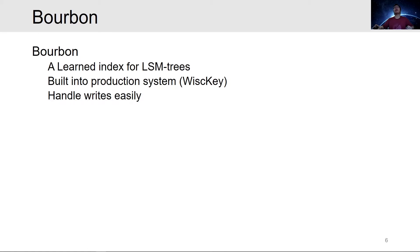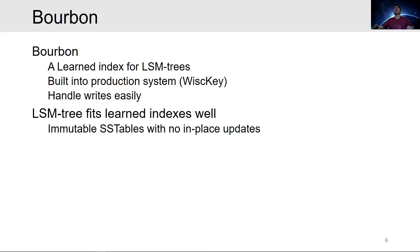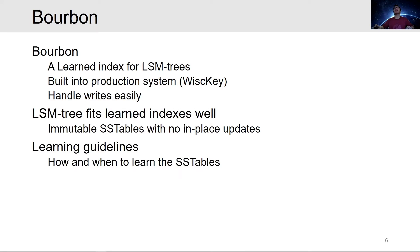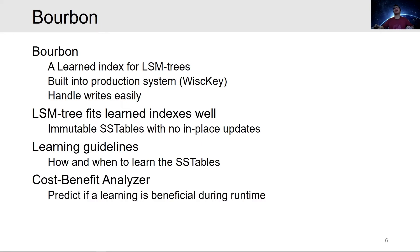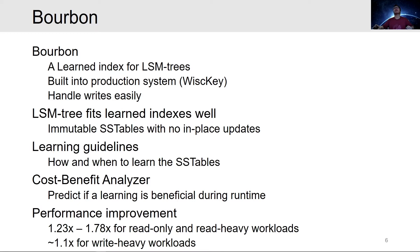We present Bourbon to answer these questions. Bourbon is a learned index for log-structured merge trees built into a production quality system, WiscKey. By taking advantage of some nice characteristics of LSM trees, Bourbon handles writes with ease. We show that LSM trees fit learned indexes well, mainly because they arrange data into immutable SSTable files and there is no in-place updates to these tables during writes. Bourbon improves read-only and read-heavy workloads by 1.23x to 1.78x compared to the baseline WiscKey, and has about 1.1x gain for write-heavy workloads.